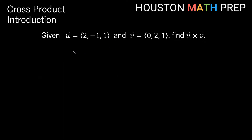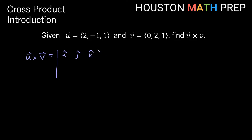Let's work through an example. Given u = (2, −1, 1) and v = (0, 2, 1), find u × v. We set this up as a 3×3 determinant with î, ĵ, k̂ in the first row, then u's components 2, −1, 1 in the second row, and v's components 0, 2, 1 in the final row.